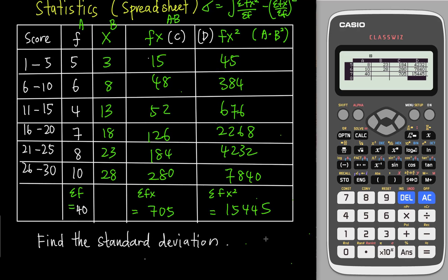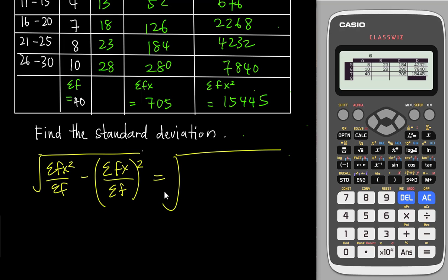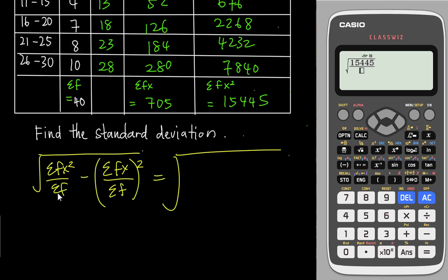After getting all the numbers, I apply them to the formula. I go to Menu 1 and enter: square root of (15445 ÷ 40) minus (705 ÷ 40)², making sure to close the bracket before squaring. The calculator gives the standard deviation = 8.6882. Of course, in the exam you need to write down all the working to show you did it manually.